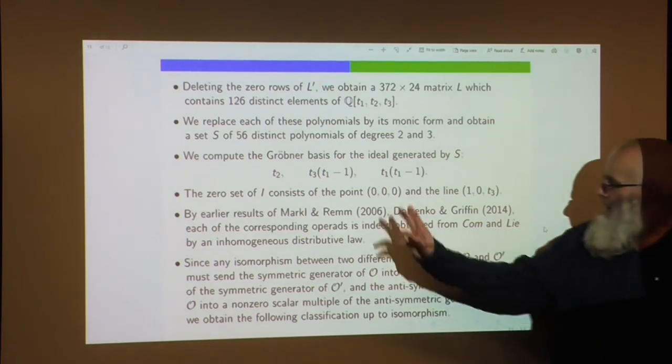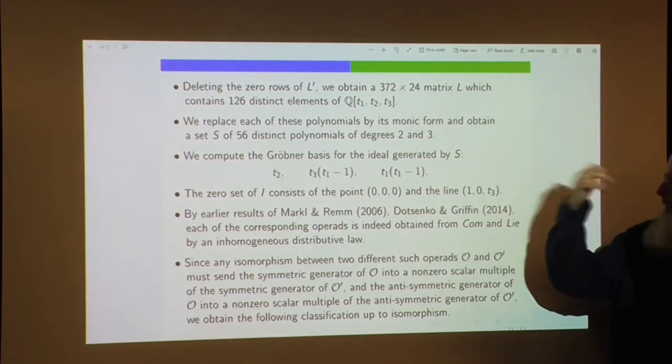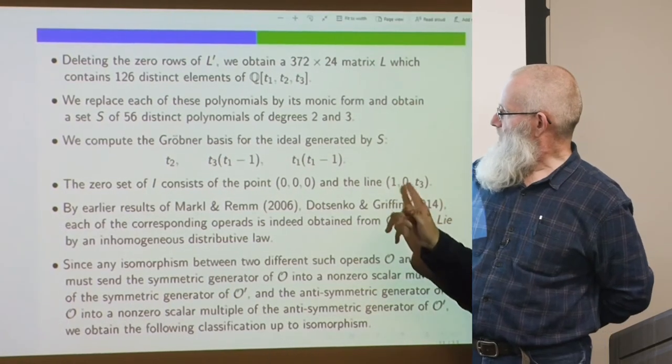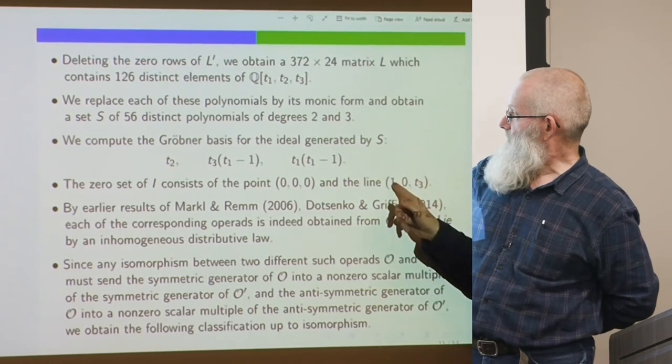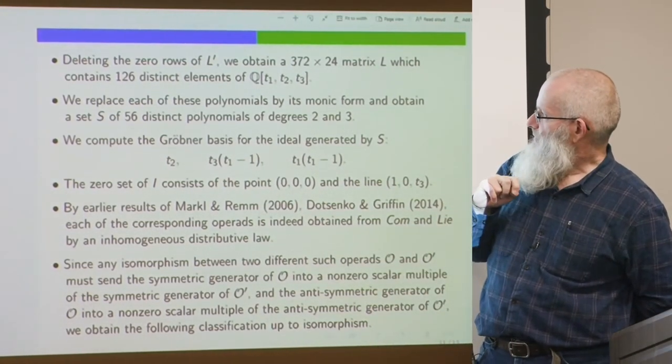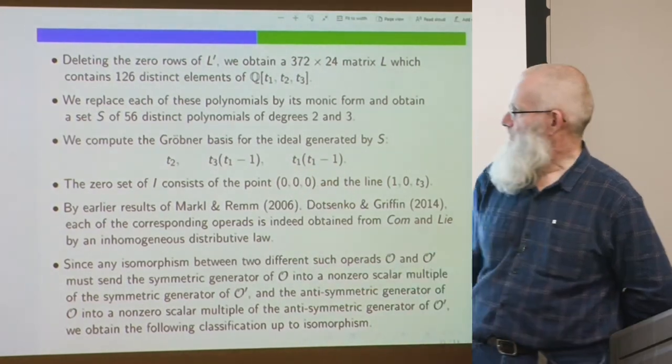The result shows that T_2 must be zero in all cases. If T_1 equals 1, then T_3 is arbitrary. If T_1 is not 1, then T_3 must be zero, which implies T_1 must be zero. So the zero set of that ideal consists of a point — corresponding to T_1=0, T_2=0, T_3=0 — and a line — a one-parameter family with T_1=1, T_2=0, T_3 arbitrary.